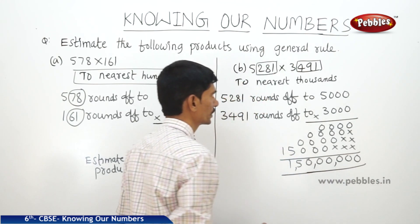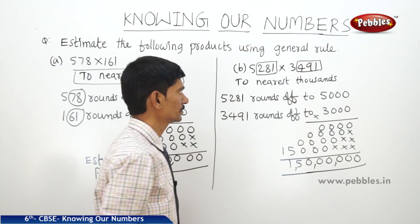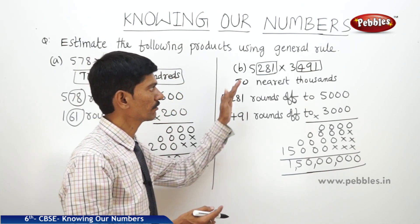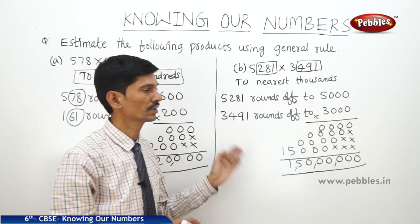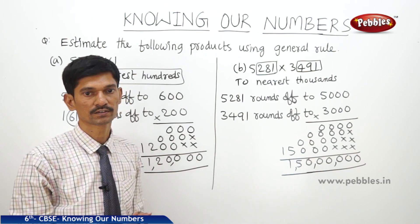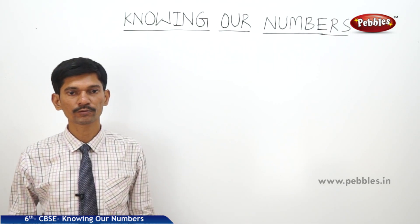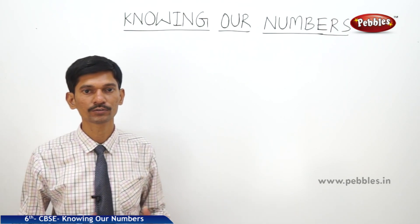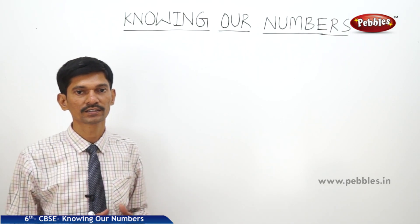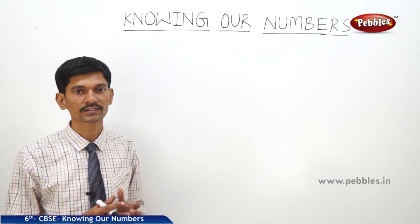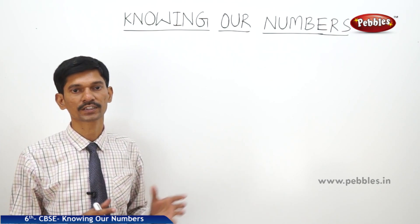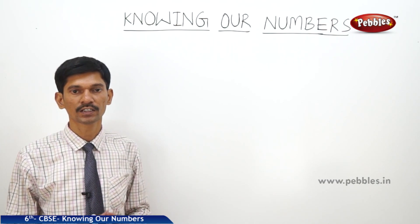You will get some other answer when you correct each of the numbers to the nearest hundreds or the nearest tens. So far we have learnt how to estimate the sum, the difference, and also the product of the given numbers.